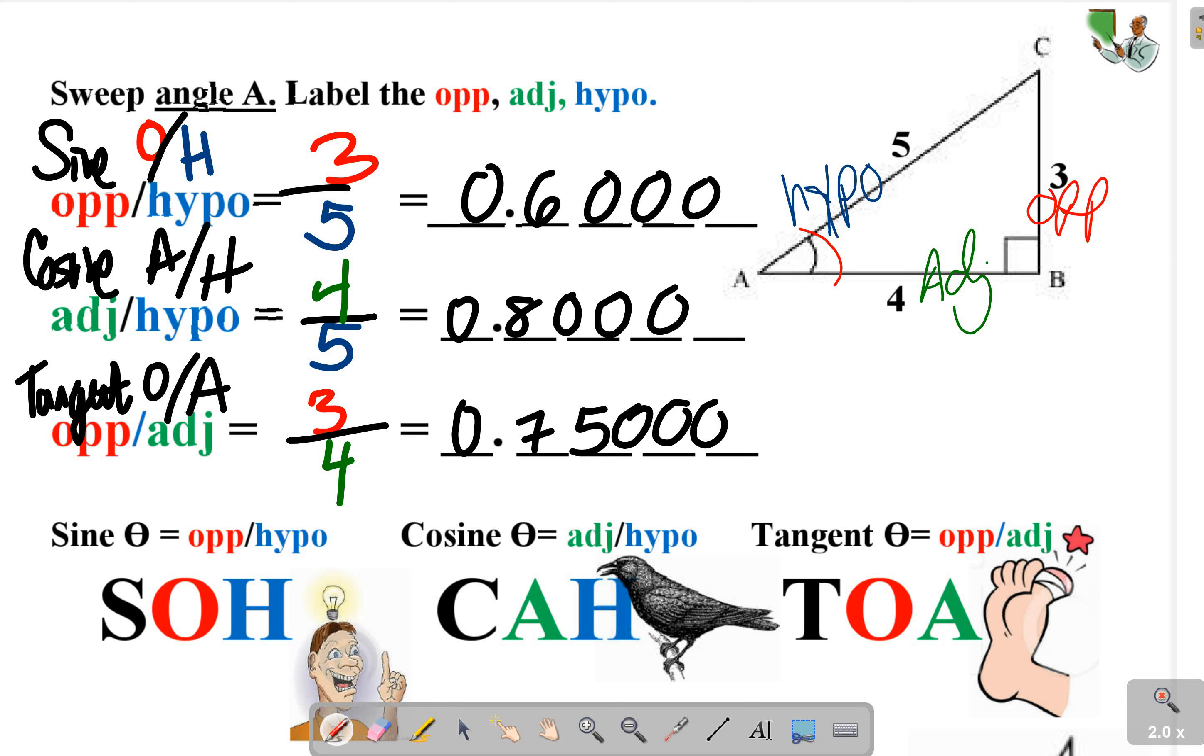Sine, cosine, and tangent. That's where we get the acronym SOHCAHTOA. Sine of theta equals opposite over hypotenuse. Cosine of the angle theta equals adjacent over hypotenuse. Tangent of the angle theta equals opposite over adjacent.